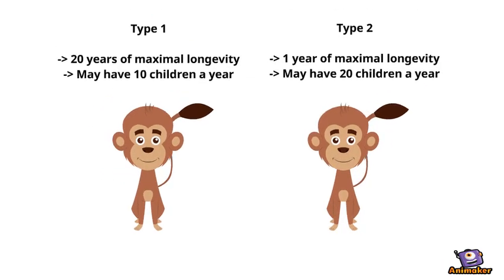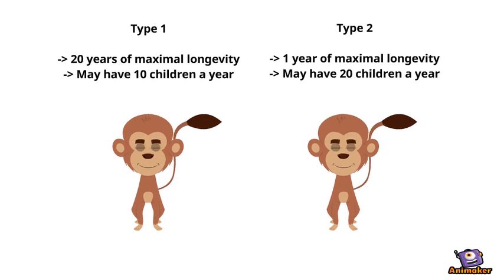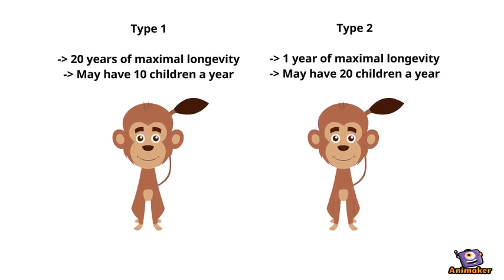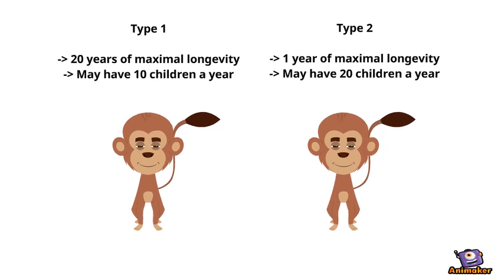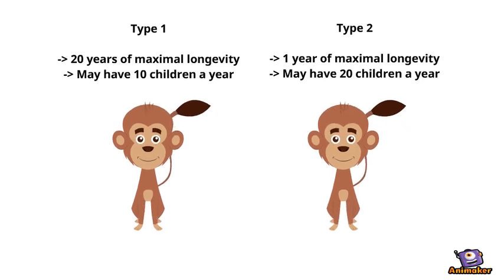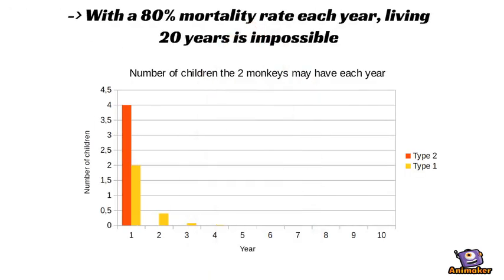Let's see with an example. Here we have two breeds of monkeys. The type 1, which dies of aging at 20 years and may have 10 children a year. And the type 2, which dies of old age after one year but can have twice more children. Let's suppose they have an 80% mortality rate each year, which means that only 20% of them could survive and have children after one year.